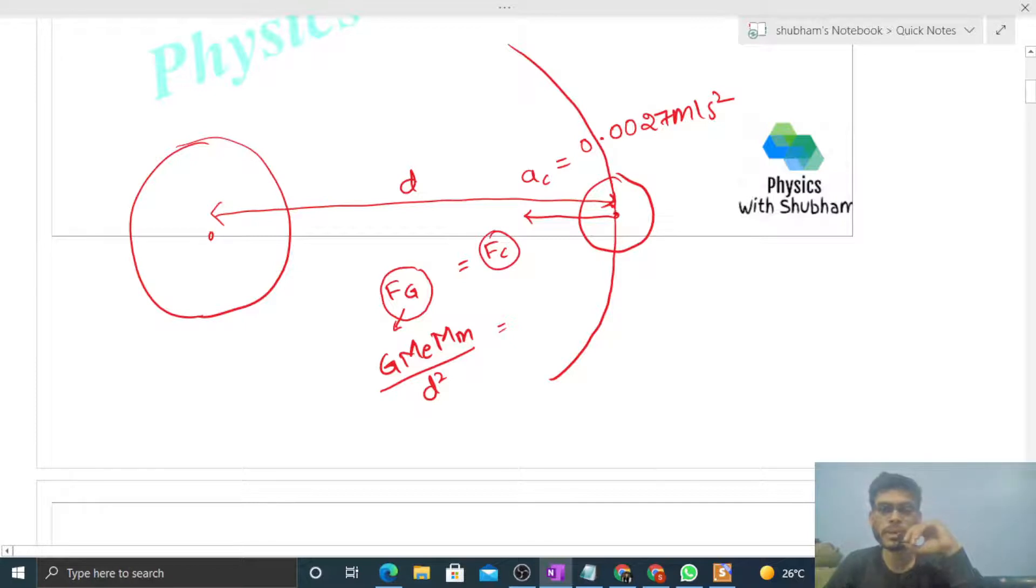Now centripetal force on the moon will be mass of the moon times centripetal acceleration of the moon. So here, mass of the moon cancels. What we are getting is centripetal acceleration of the moon equals GME divided by D squared.